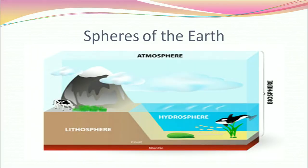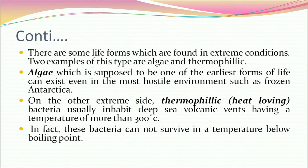There are some life forms found in extreme conditions. Two examples are algae and thermophilic bacteria. Algae, one of the earliest forms of life, can exist even in the most hostile environments such as frozen Antarctica. On the other extreme, thermophilic bacteria are heat-loving bacteria that usually inhabit deep-sea volcanic vents having temperatures of more than 300 degrees centigrade. In fact, these bacteria cannot survive at temperatures below boiling point.